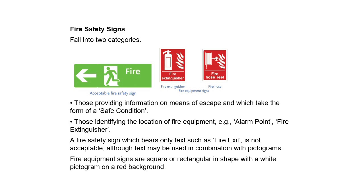Fire safety signs fall into two categories: those providing information on means of escape, which take the form of a safe condition sign, and those identifying the location of fire equipment — for example, alarm points and fire extinguishers. A fire safety sign bearing only text, such as 'fire exit,' is not acceptable, although text may be used in combination with pictograms. Fire equipment signs are square or rectangular in shape with a white pictogram on a red background.